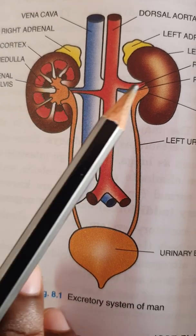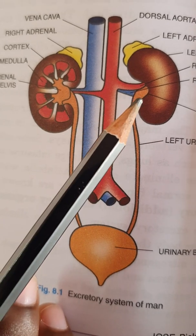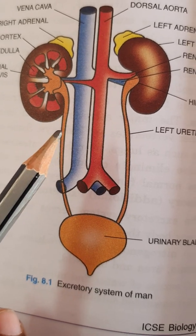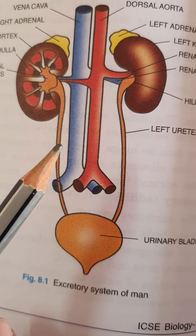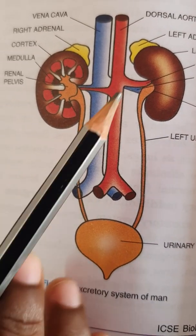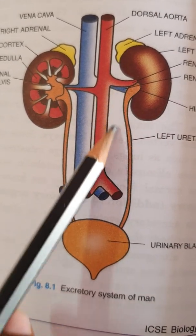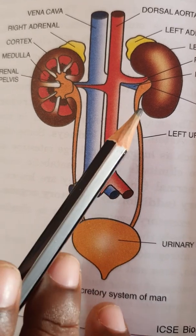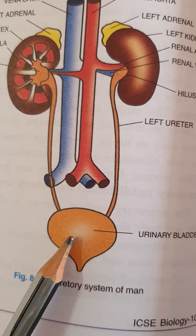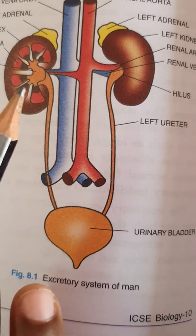To summarize: there is a pair of kidneys present on either side of the vertebral column, protected by the last two pairs of ribs. One side of each kidney is concave and the other is convex. From the concave side, a ureter from each kidney arises and opens into the urinary bladder, from which urine is periodically excreted through the urethra.